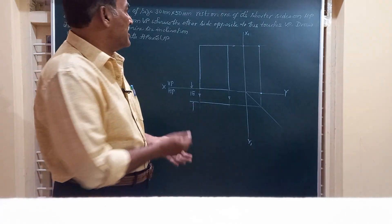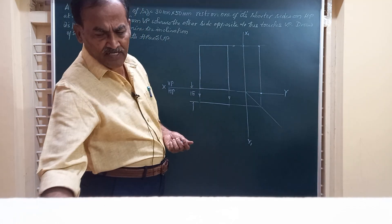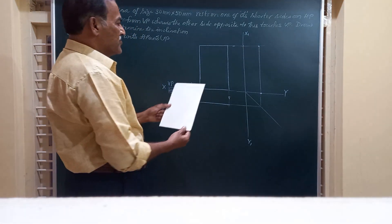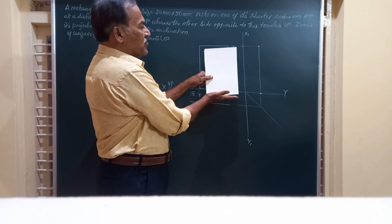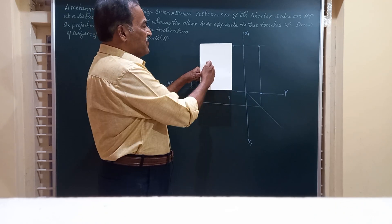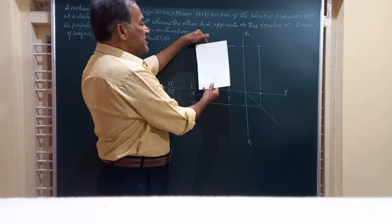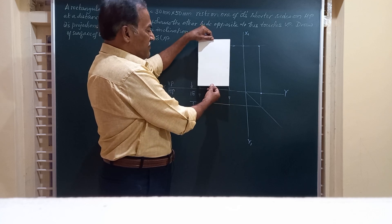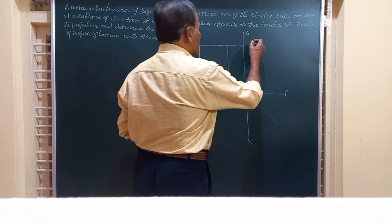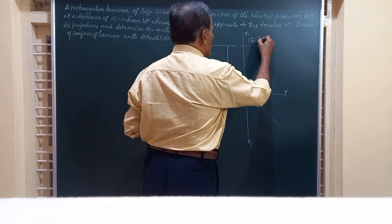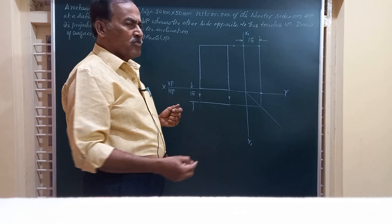Friends, let's see the question for this video. A rectangular lamina of size 30 by 50 rests on one of its shorter edges on HP and is at a distance of 15 mm from VP. This is the vertical plane and this is the horizontal plane. We are going to place the lamina such that in the front view it is seen as a rectangle 30 by 50, and in the top view you see a line. Since it is at a distance of 15 mm from VP, that distance of 15 mm is visible both in the top view and in the end view. We are holding this lamina parallel to VP at a distance of 15 mm.